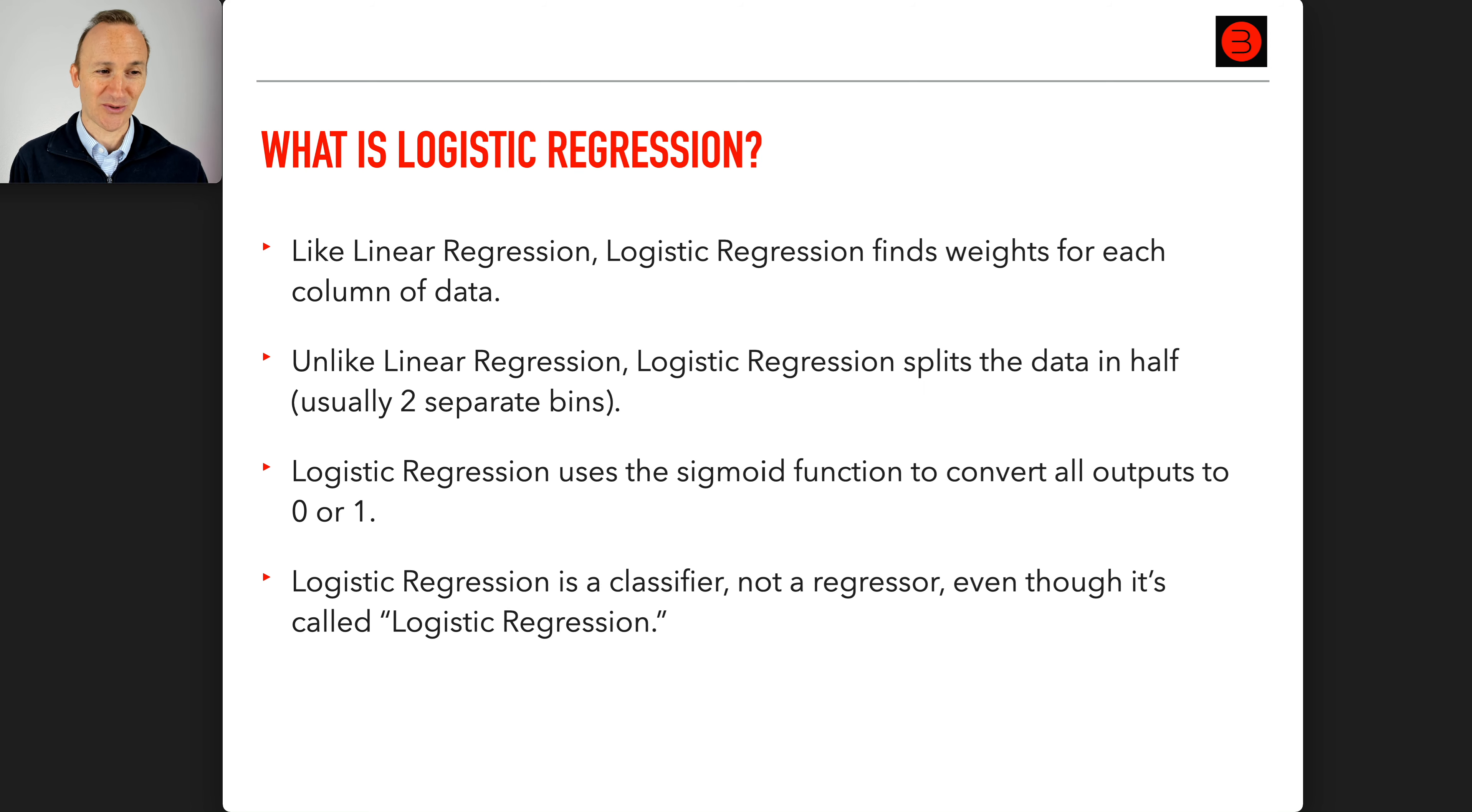Logistic regression is a classifier, not a regressor, even though it's called logistic regression. This is very confusing, but there's a history of regression lines and the idea is that the data is regressing, kind of like moving toward the line, but the line could in fact be a curve. There's a distinction in machine learning between classification, which is classifying data into two or very few values, and regression, which involves predicting usually a range of an infinite number of values.